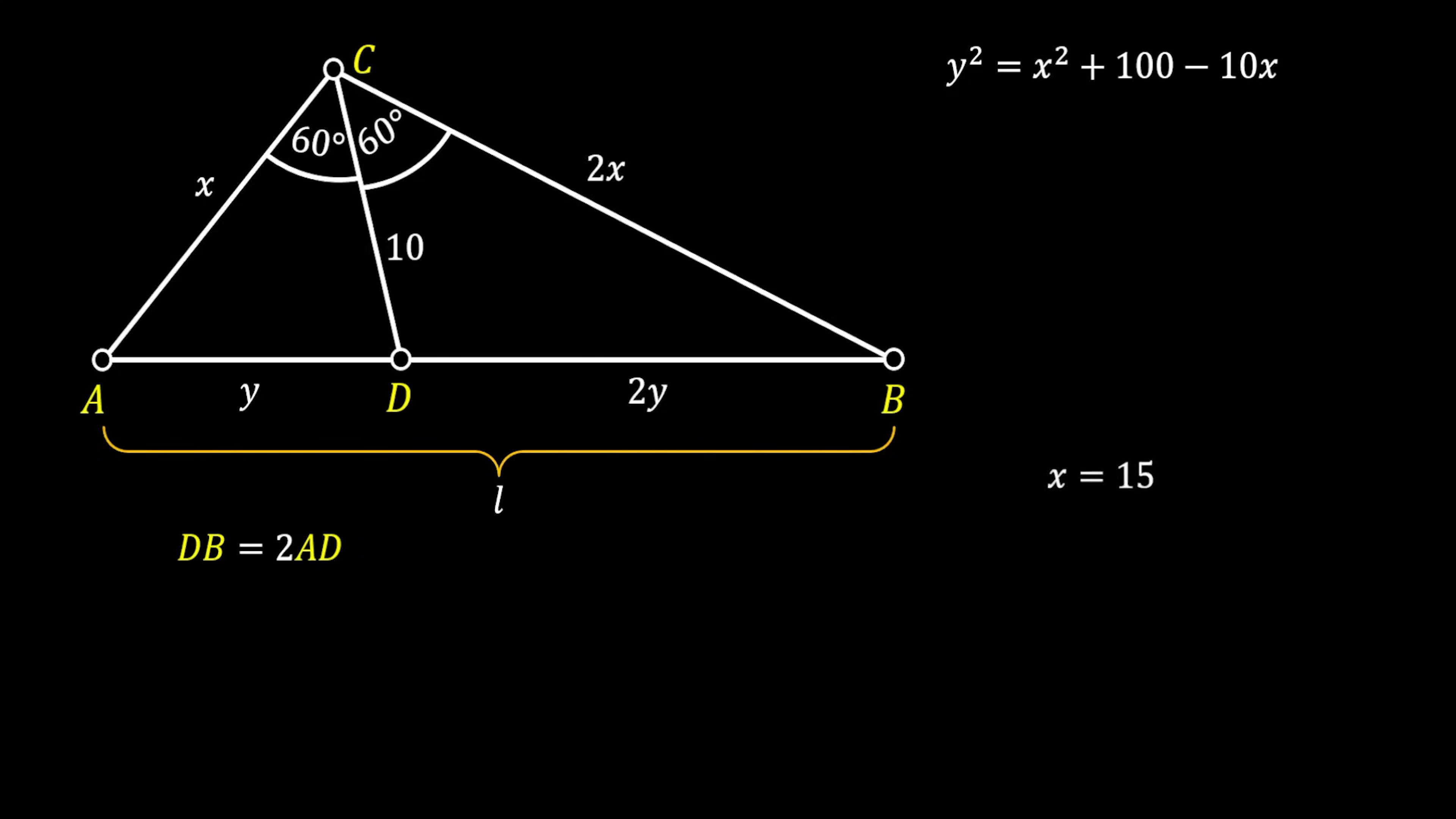Now, this is really cool because in this way, we found out the lengths of the sides AC, which is 15, and BC, which is 30. But in order to find the value of Y, we are just going to replace the value of X back into our first equation. We are just going to work through this and get that Y squared is equal to 175, which means that Y is equal to square root of 175. This really nicely simplifies as 5 root 7.